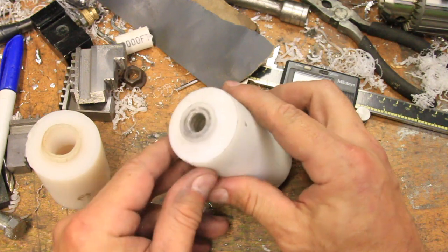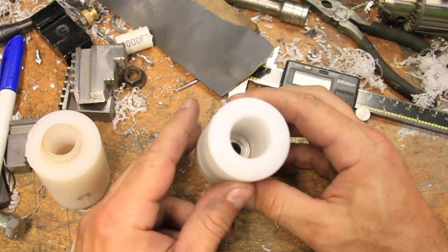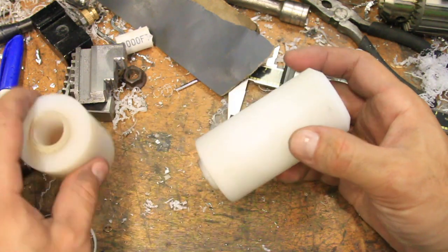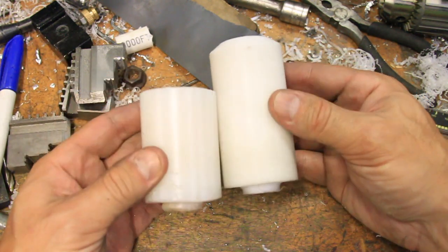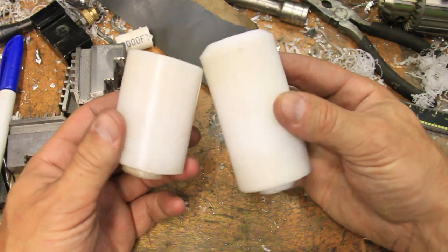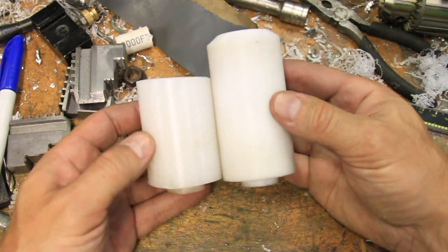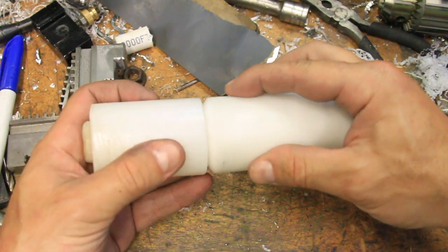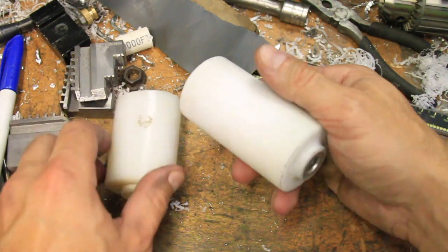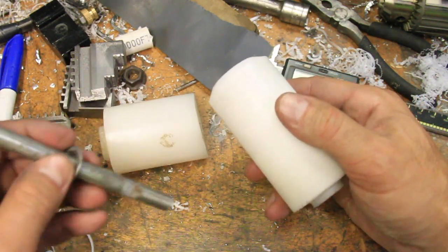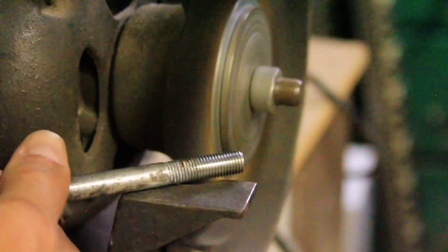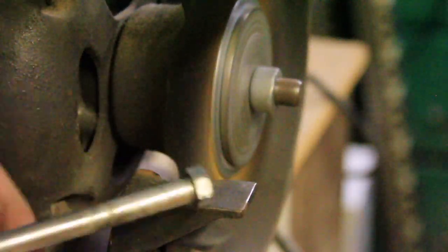All said and done, it looks like a pretty good representation of what the old slider once was. The last step is to clean up the mounting bolt and reinstall it on the bike.